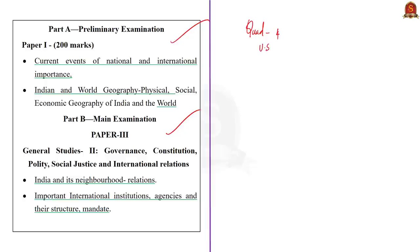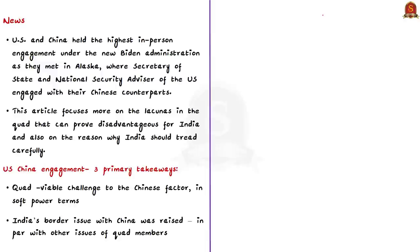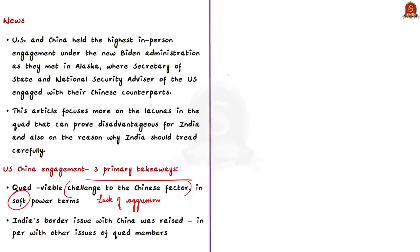The author looks at the Quad from the Chinese lens in the context of the US-China in-person engagement at Alaska. Three takeaway points have been identified. Firstly, the US has asserted that Quad can be a viable challenge to China in soft power terms without any aggressive positioning. For example, instead of deploying naval ships at the South China Sea, Quad is trying to gain dominance through vaccine distribution and climate change. Secondly, India's border issue with China was raised along with Japan's Senkaku Islands issue and China's coercion of Australia, with India's concerns kept at par with other Quad members.